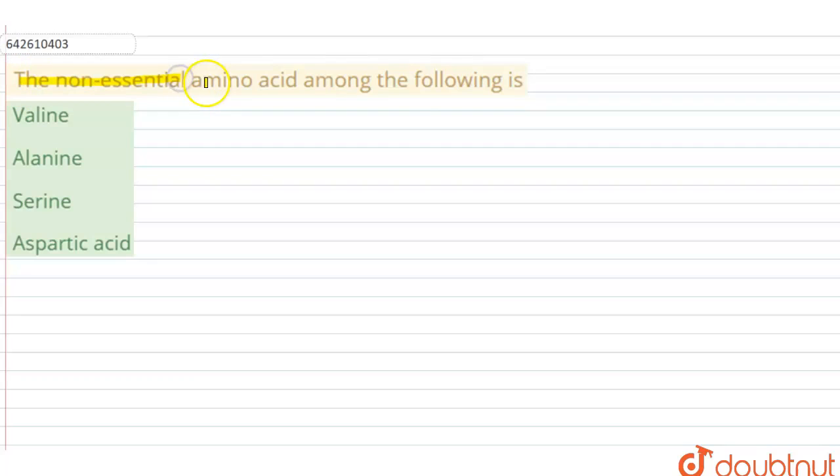The non-essential amino acid among the following is - so first of all what are amino acids? Amino acids are the building blocks of proteins and our body needs almost 20 different amino acids, abbreviated as AA, to grow and function properly. Now in these 20 different amino acids we have nine of them which are very essential ones.